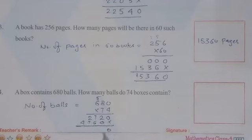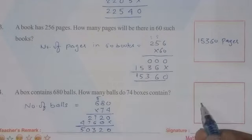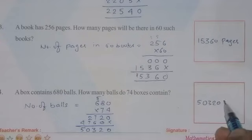Now add these 2. 0. 2 plus 0 is 2. 7 plus 6 is 13, so 3 here and 1 in carry. 1 plus 2 is 3. 3 plus 7 is 10, so 0 carry over 1. 1 plus 4 is 5. This is the answer. So the answer is 50320 balls.